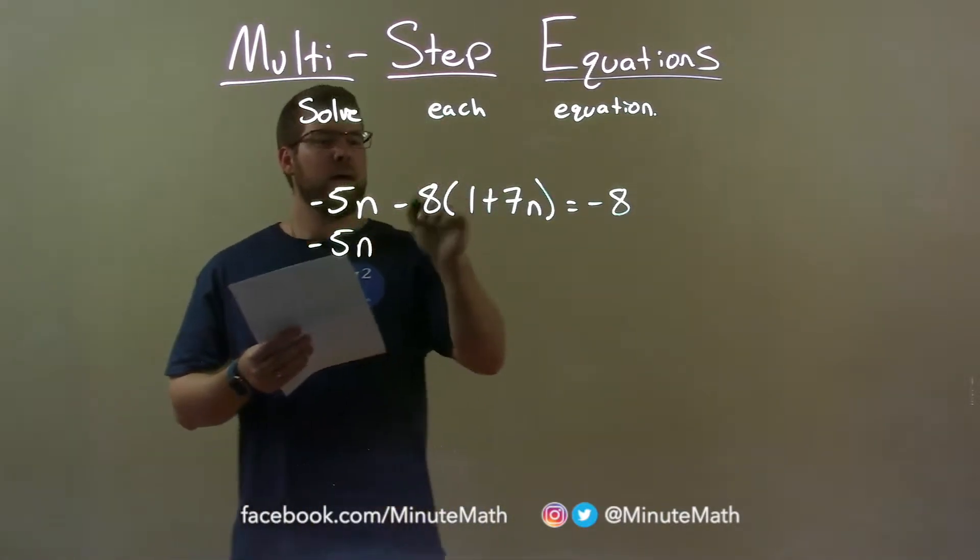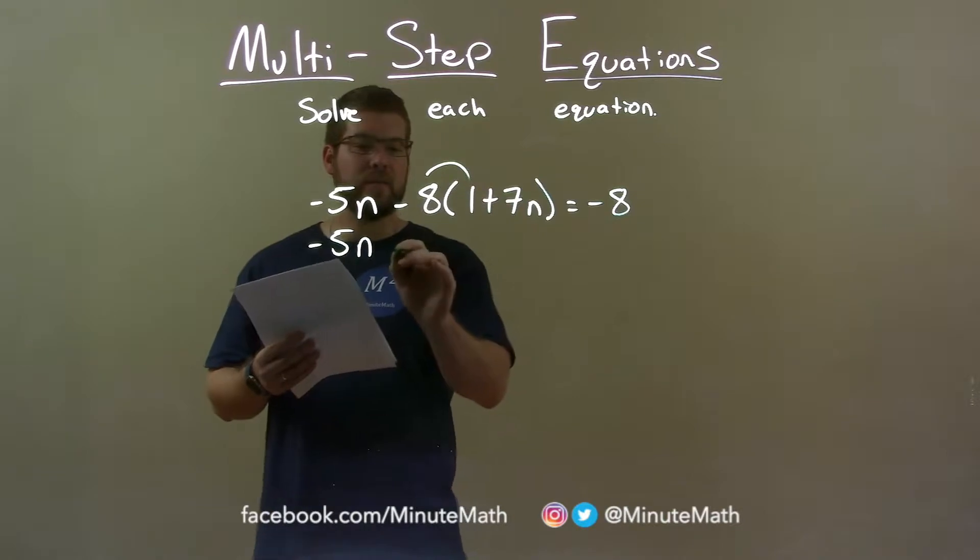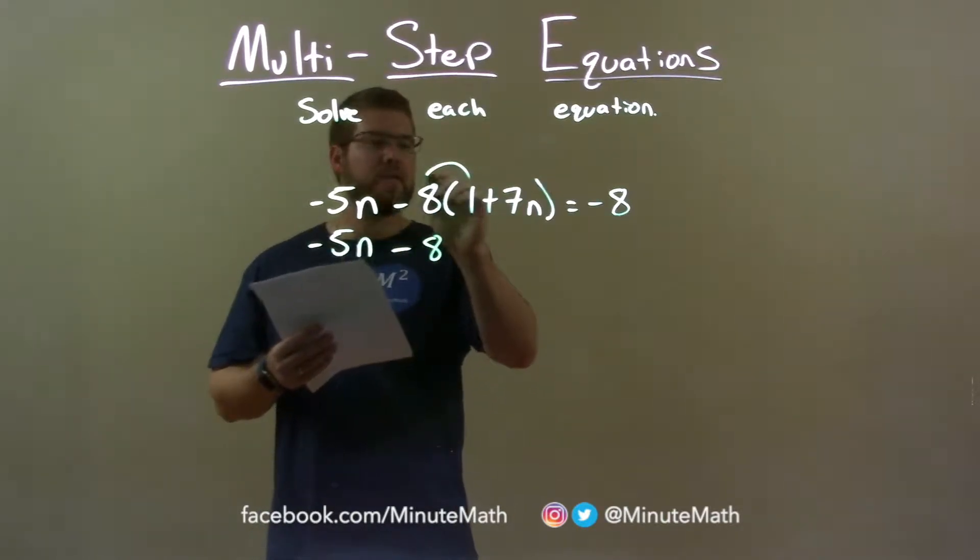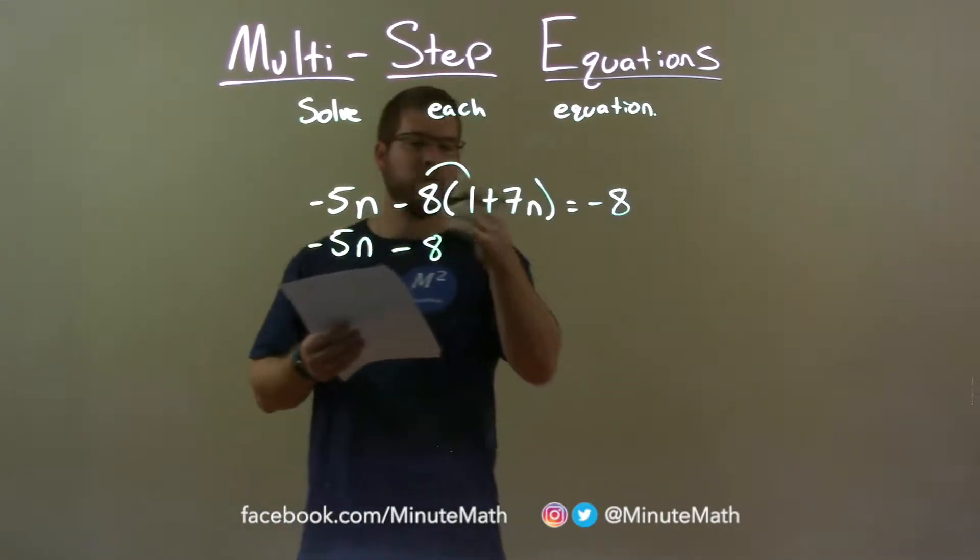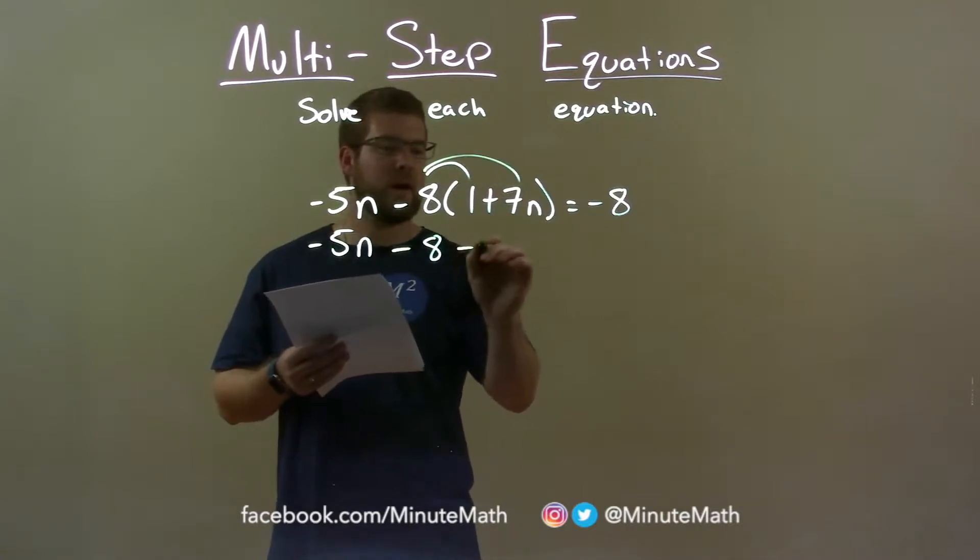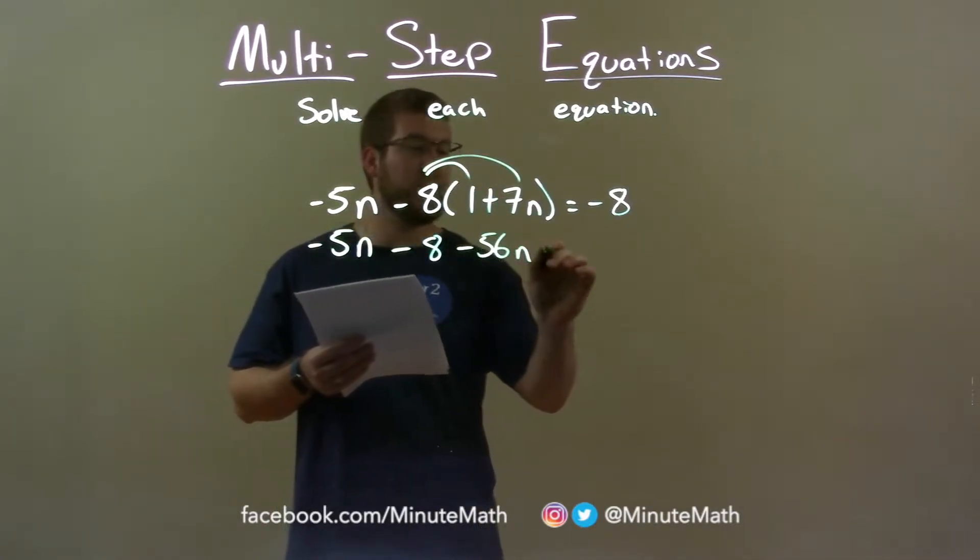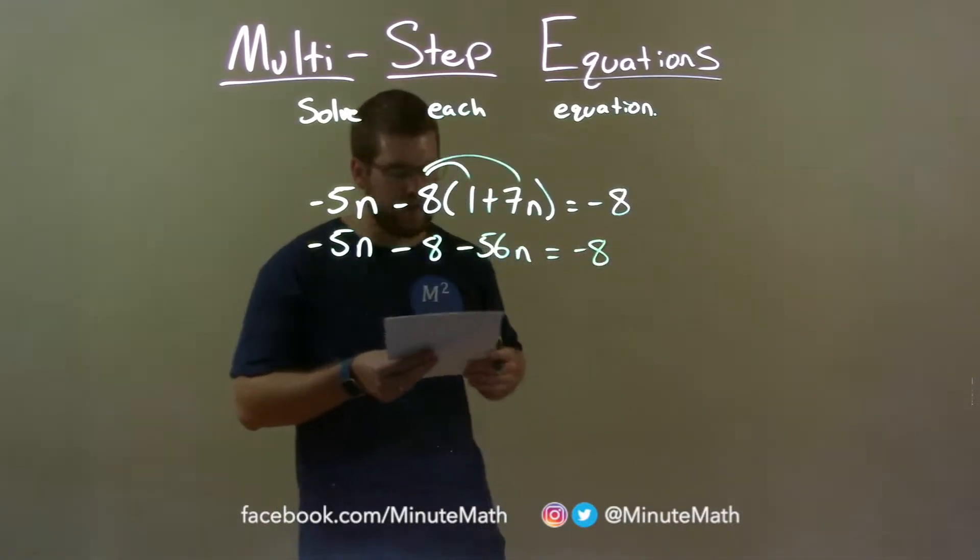Negative 5n, now negative 8 times 1 is a minus 8. 8 times 7 is a 56, but don't forget the subtraction sign. So minus 56 and the variable n. That equals negative 8.